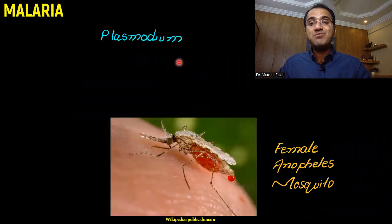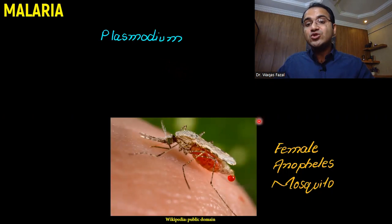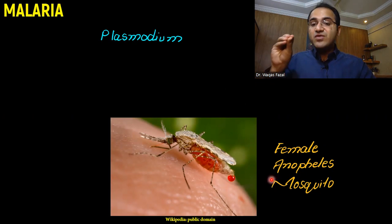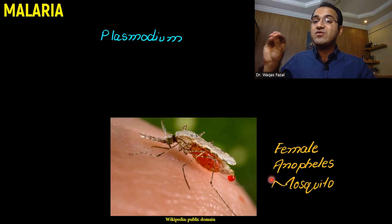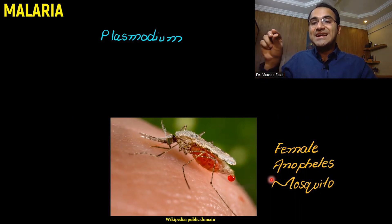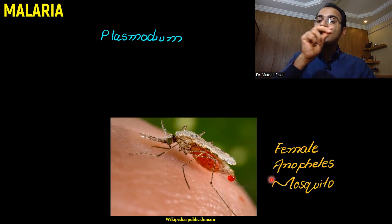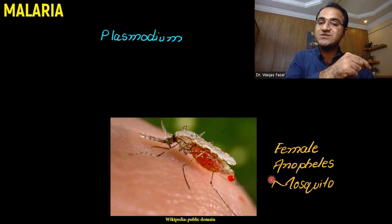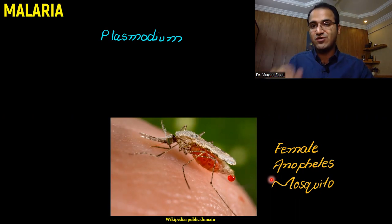Malaria is caused by a parasite, plasmodium. Plasmodium is transmitted through the female anopheles mosquito, which is the vector for the plasmodium parasite. The female anopheles mosquito bites a person infected with plasmodium and carries plasmodium to a healthy person, transmitting the parasite and resulting in malaria.